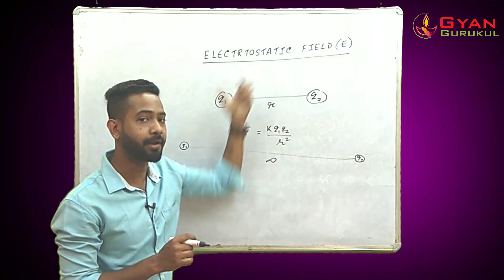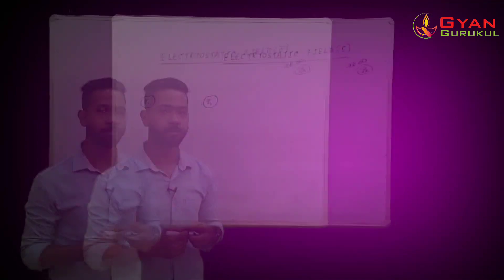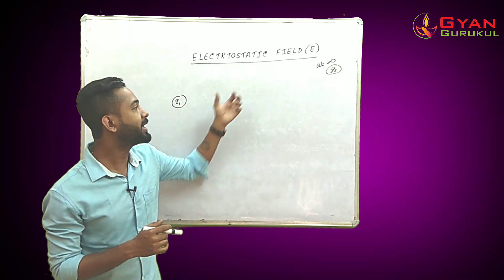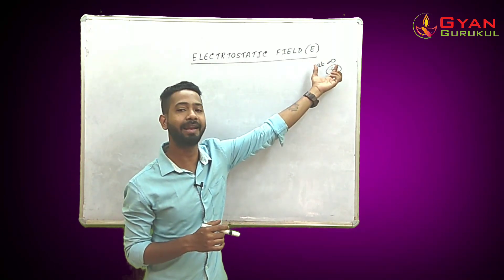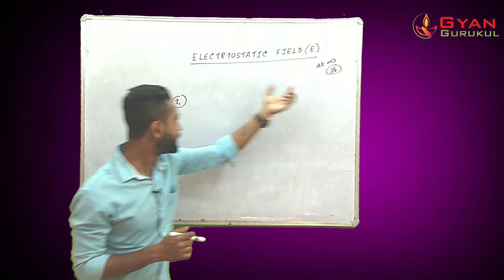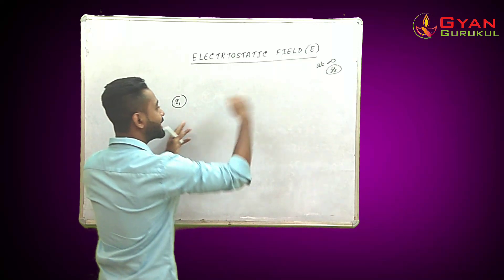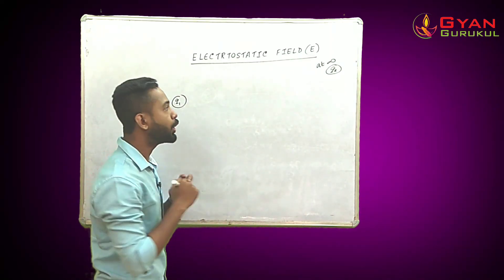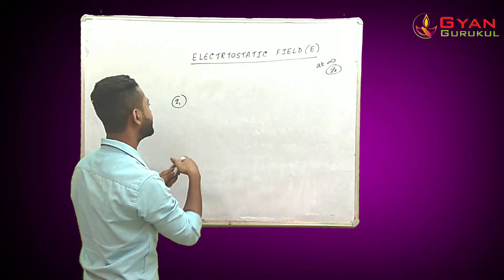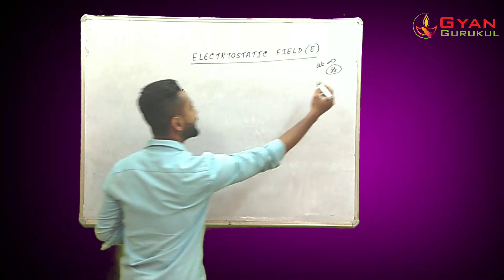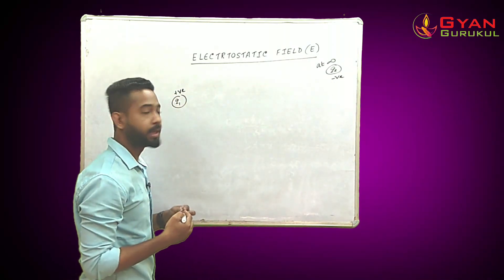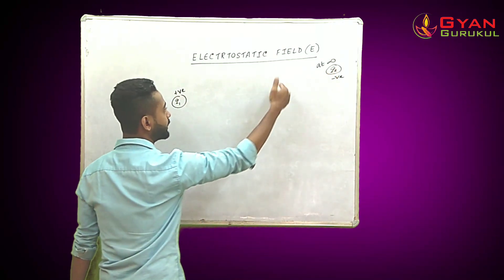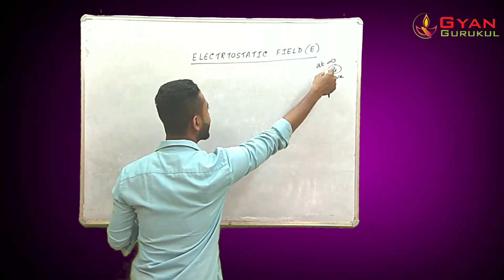This is where we bring in the concept of electrostatic field. To understand it, consider charge q2 placed at infinite distance from q1. Since the distance is infinite, there is no force between them. Let's say q1 is positive and q2 is negative.